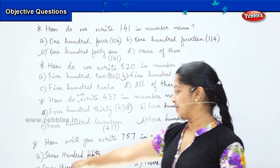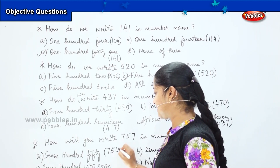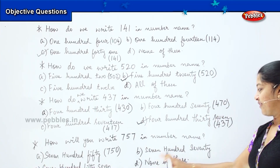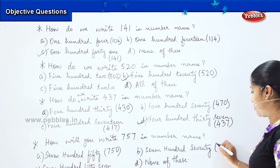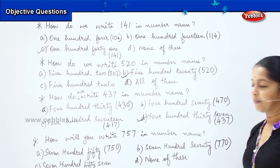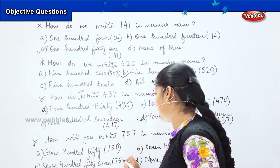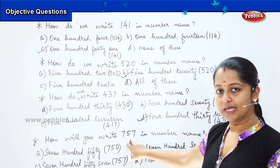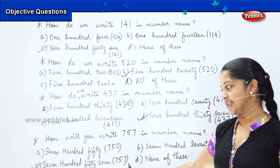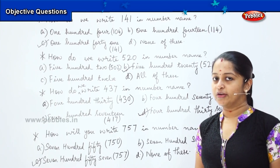The first option, 750, is written as 7, 5, 0 — that does not match our question. The second option, seven hundred seventy, is 7, 7, 0 — no match. The third option, 757, is written as 7, 5, 7 — is this the same as our question? Yes! So my right answer is option C, which is 757. Are you clear, children? Shall we do some more sums to explore better?